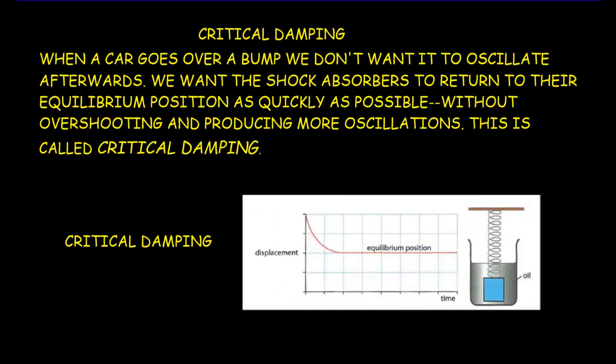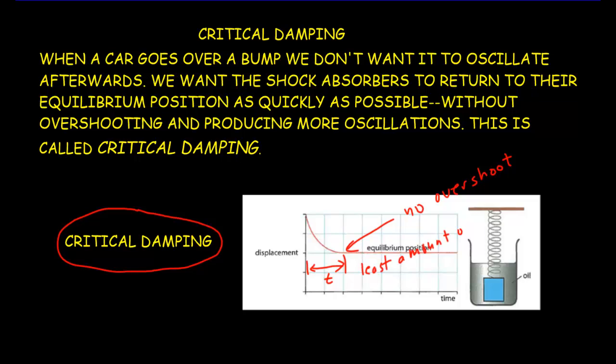What you really want from a shock absorber is what's called critical damping. Key features here: first thing is that there's no overshoot, and the other thing is that this amount of time here, that's the least amount of time it could possibly take to get back to equilibrium. So this is the least amount of time to reach equilibrium.